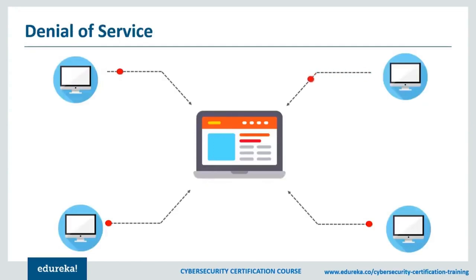Moving on to our next type of attack: denial of service. This is a pretty common one — not to be confused with distributed denial of service, which I'll cover next. A denial of service is any attack or action that prevents a service from being available to its legitimate or authorized users. Examples include a ping flood, a SYN flood, or a smurf attack using ICMP echo requests with broadcast addresses. You can also get a denial of service from a malformed packet: if a program doesn't handle it correctly and crashes, you're denied the use of that service.